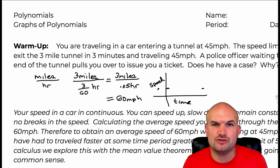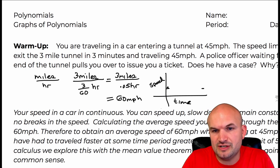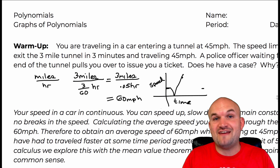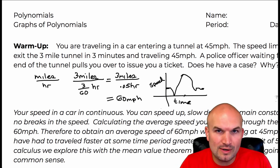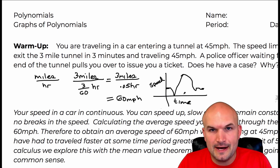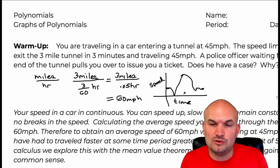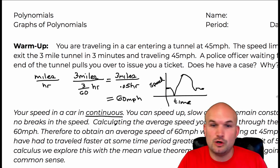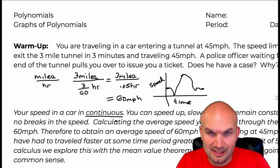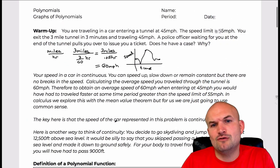In a real-life situation, your speed is what we call continuous. You could have stopped, gone down to zero, then accelerated really fast — kind of like a drag race — and still exited the tunnel at 45 miles per hour. The important thing is that it's continuous. We don't stop at the beginning of the tunnel and get transported to the end. You have to travel through the whole distance of the tunnel.